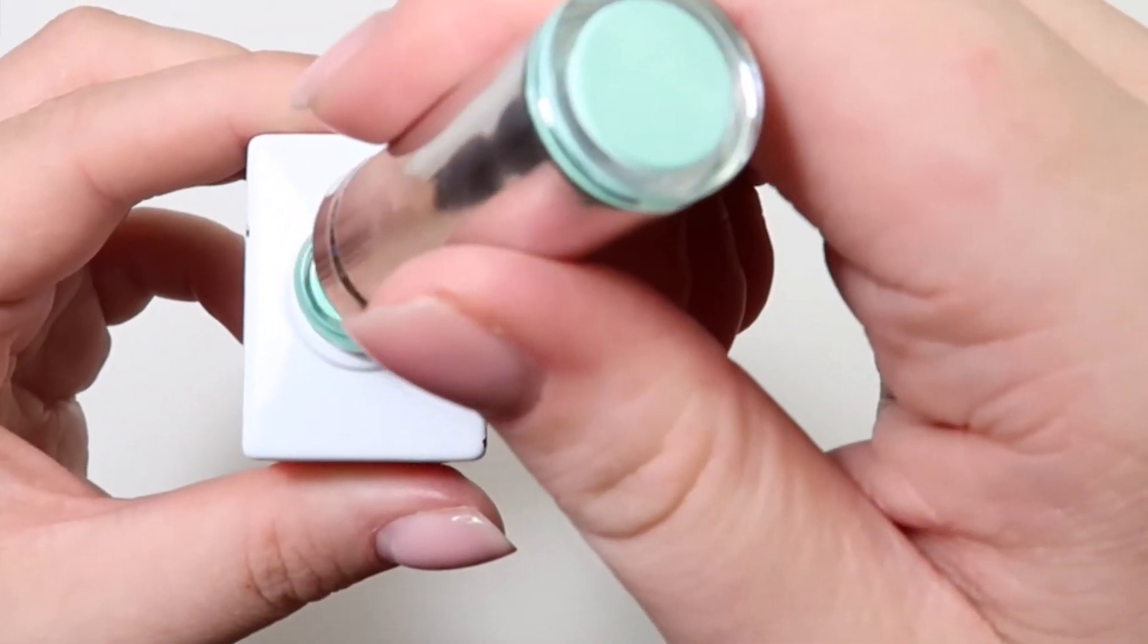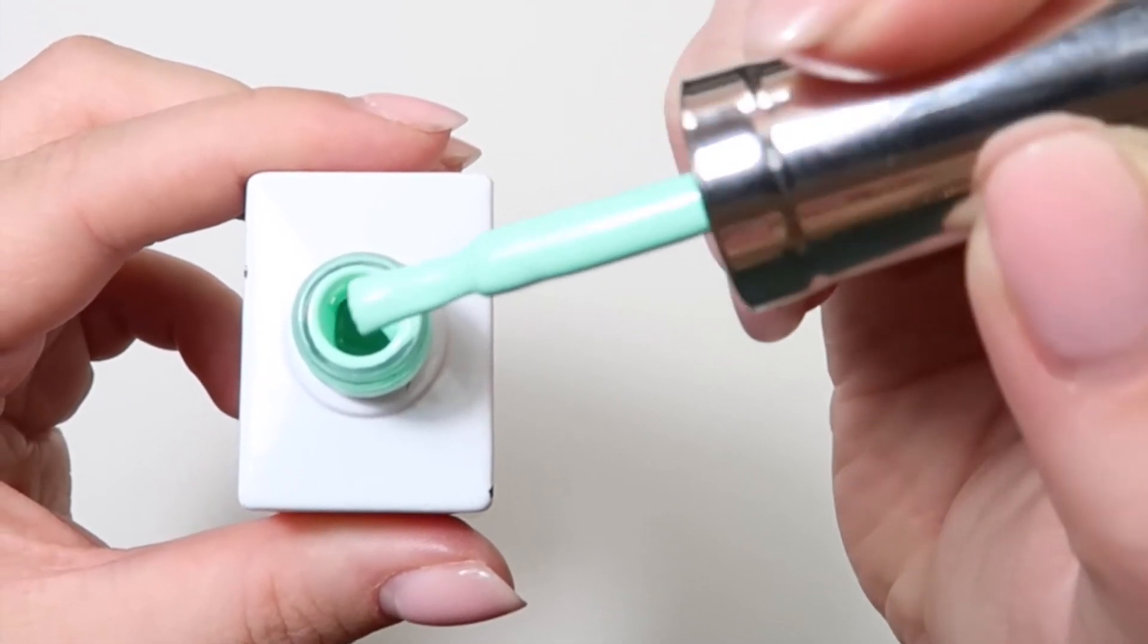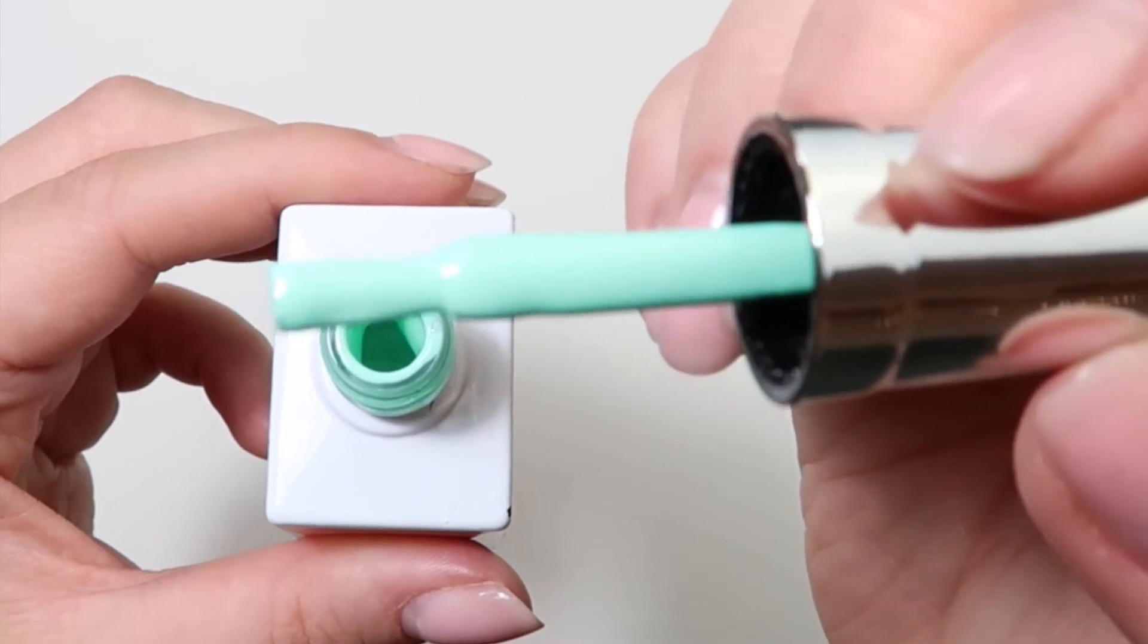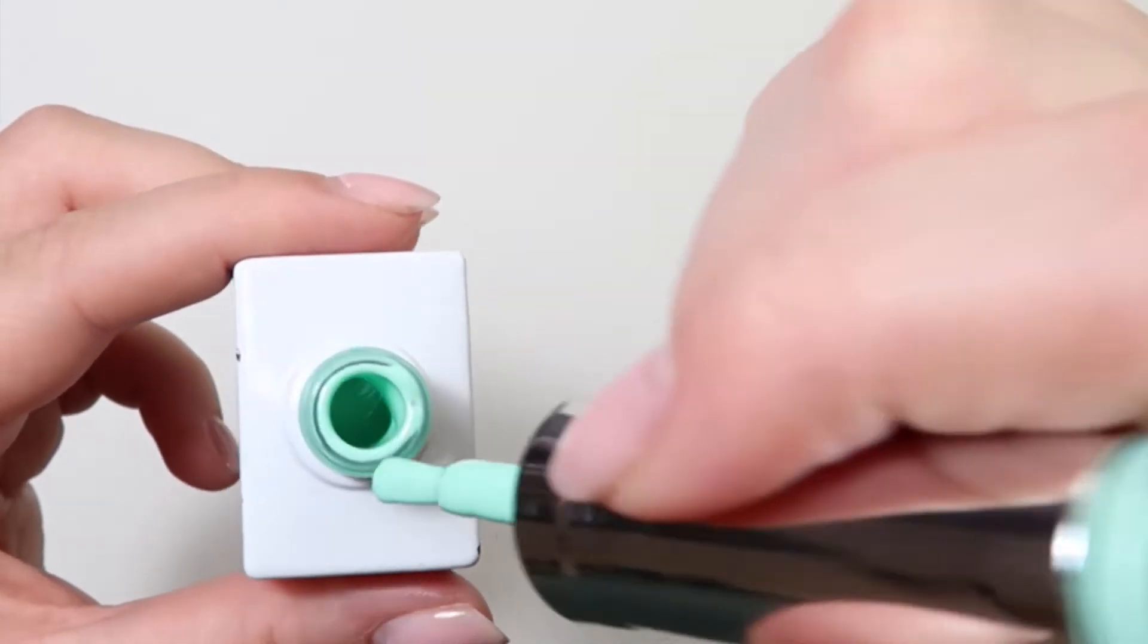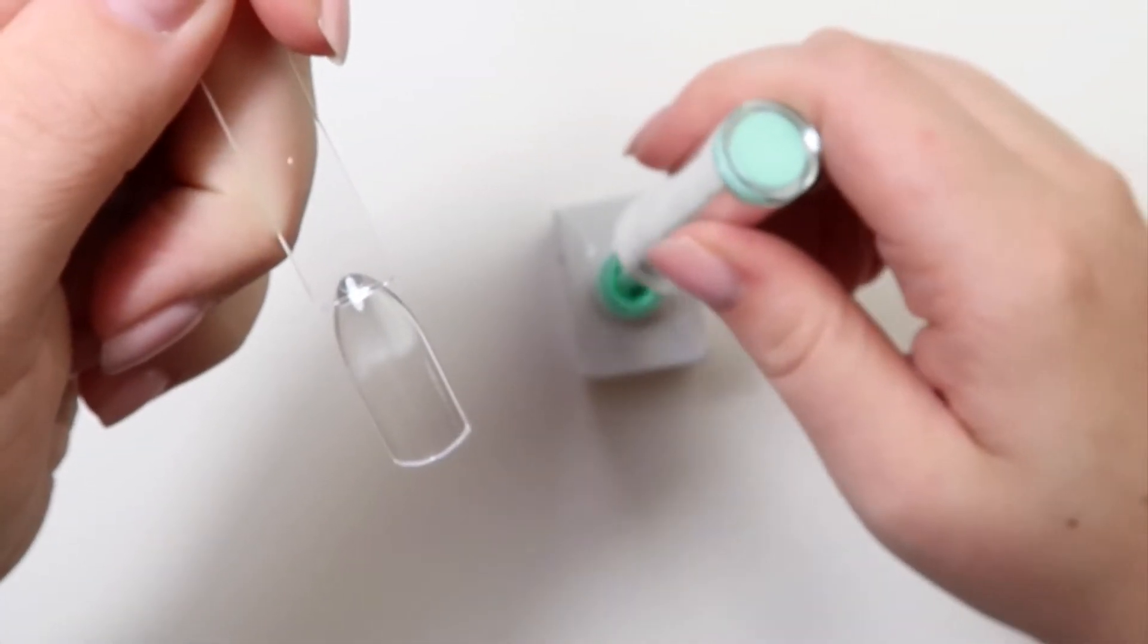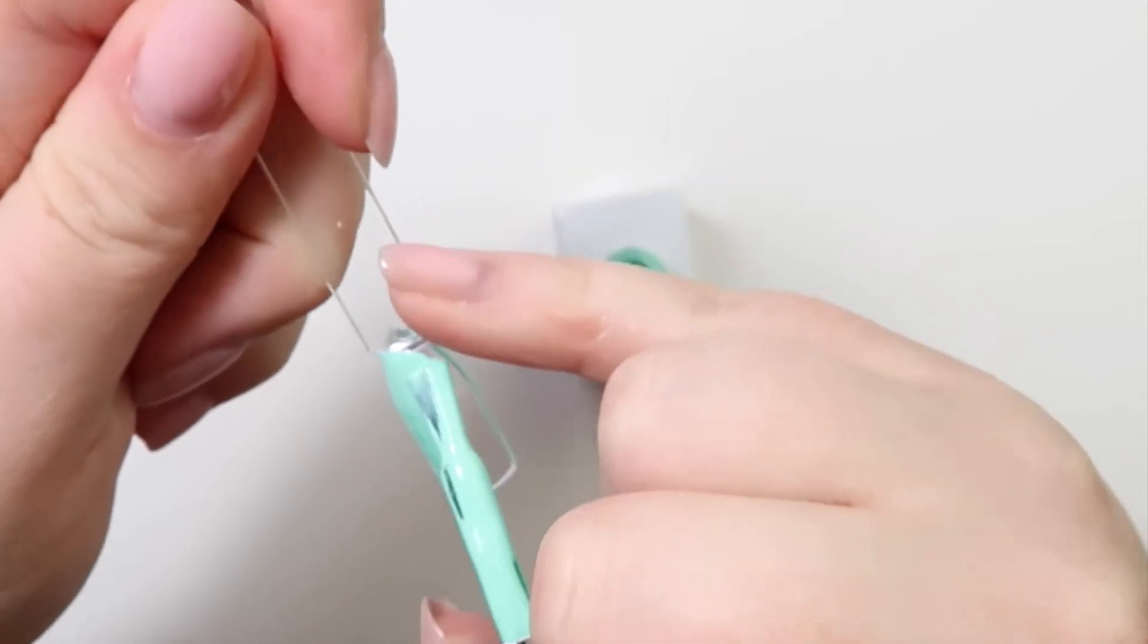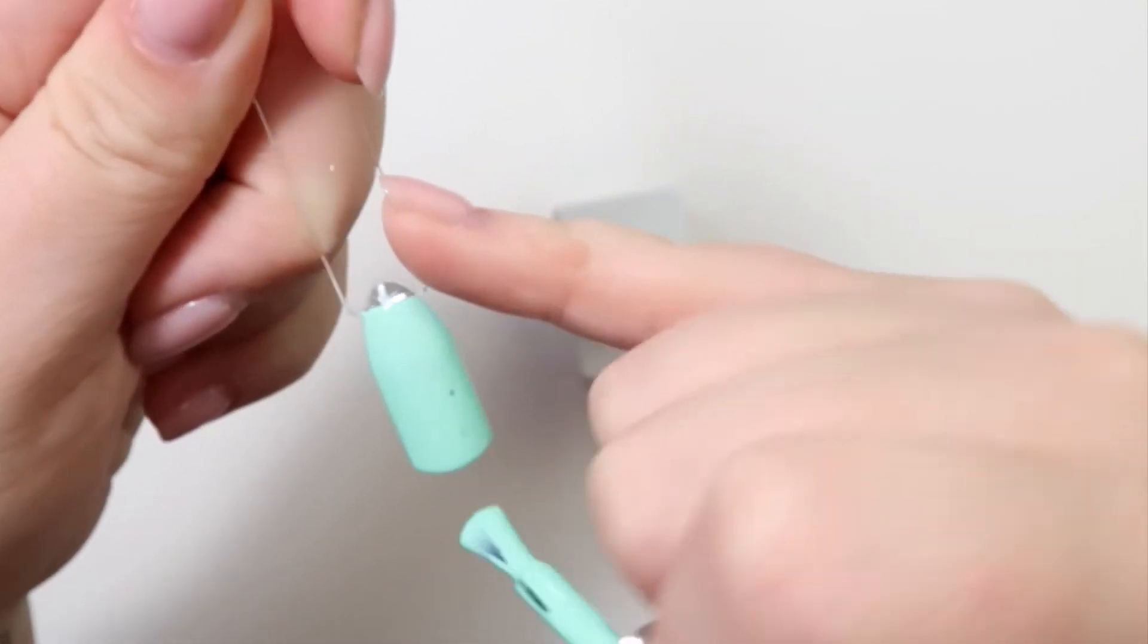Next up we have Capri. Now Capri is the only solid color in this whole collection. All the others have glitter or metallic or some form of sparkle in them, so this is the only plain one. But it is still such a beautiful holiday color. This would be the kind I would go for myself personally. It's a really nice greeny aqua kind of color.